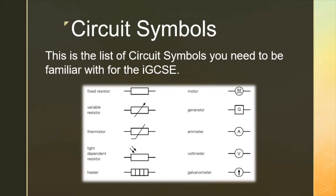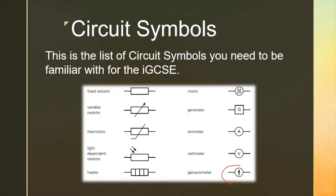The next three are symbols you should already be comfortable with and should recognize: we have an ammeter for measuring current, then a voltmeter for measuring potential difference or voltage, and the last one is a galvanometer — which is effectively just a very sensitive ammeter.